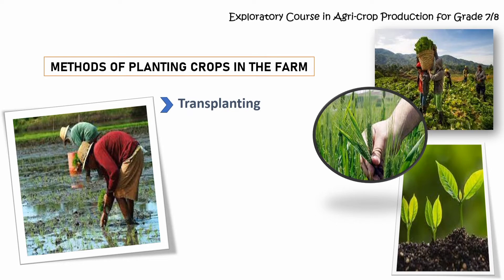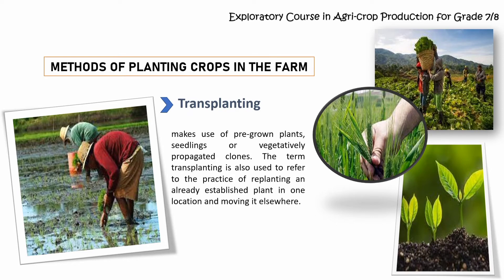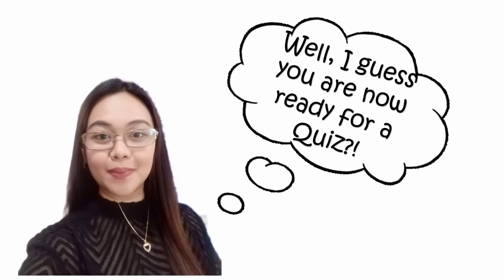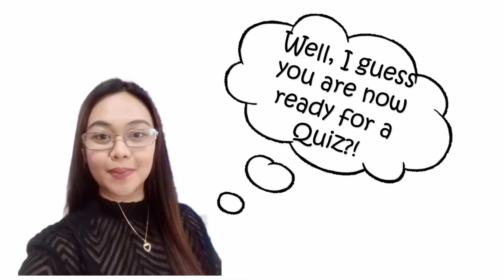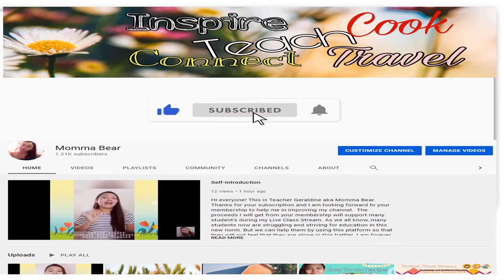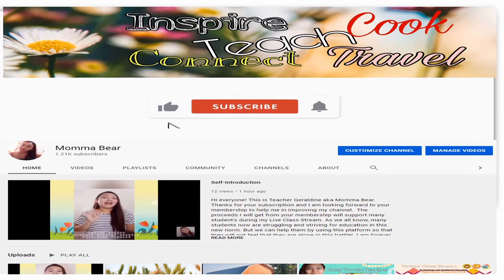Next is transplanting. It makes use of pre-grown plants, seedlings, or vegetatively propagated clones. The term transplanting is also used to refer to the practice of replanting an already established plant in one location and moving it elsewhere. I guess you are now ready for a quiz, but before anything else, if you are new to my channel, please don't forget to hit like, subscribe, and click the notification bell for updates.